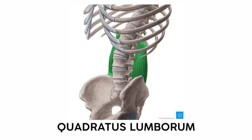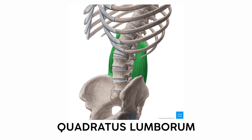On the backside of the abdominal wall is the quadratus lumborum, a name that has the memory device built in. We know that quadratus means square-shaped, and lumborum is the region — the lumbar region.